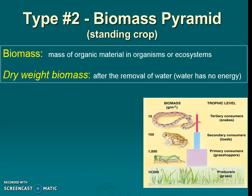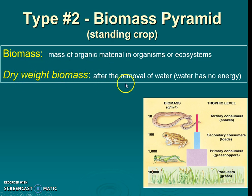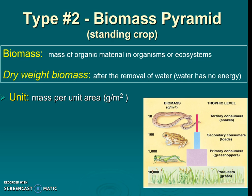The next type is the pyramid of biomass. Biomass also shows standing crop, but instead of counting each individual organism, we refer to the mass of the organic matter in the organisms in the ecosystem. Usually we look at dry weight biomass — that's the removal of water, because water doesn't have any energy. Biomass helps us understand how much energy is in the ecosystem, and the unit is mass per area. A pro is that we're now accounting for organism size.